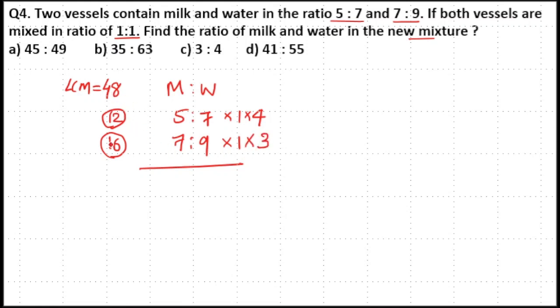Either you can take the LCM and write the numbers, or you can directly multiply above parts with below and below parts with above and cancel it.